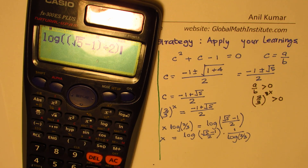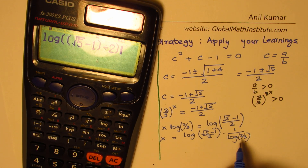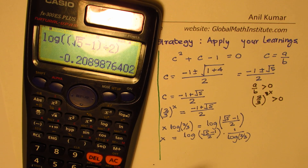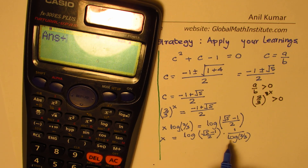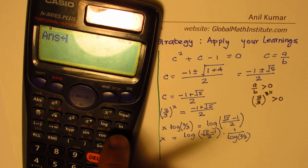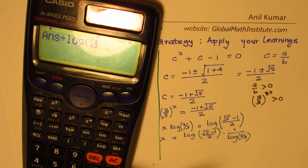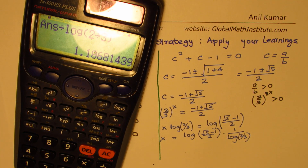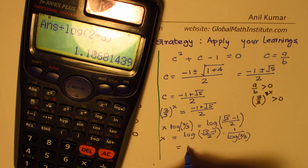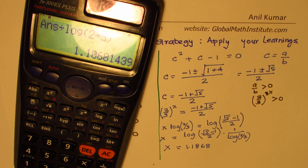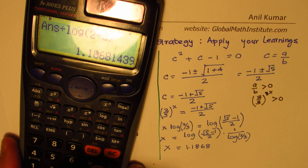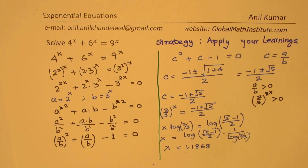Computing using the calculator: log(√5 − 1)/2) divided by log(2/3) gives x ≈ 1.1868. So the value of x is equal to 1.1868. That is how you solve this particular question.